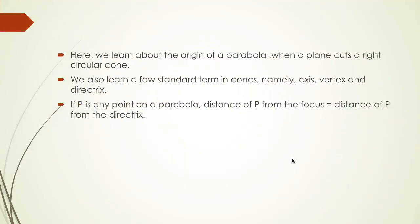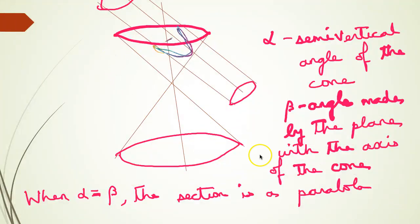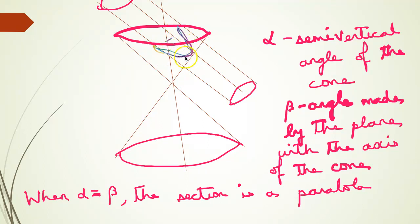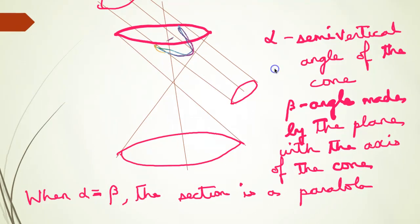Here we learn about the origin of a parabola — how a parabola is formed when a plane cuts a right circular cone. We also learn a few standard terms in Conics, namely axis, vertex and directrix. You have a right circular cone and a plane. If alpha is the semi-vertical angle of the cone and beta is the angle made by the plane with the axis, then when alpha equals beta, the section of the cone cut by the plane is a parabola. That is why it is derived from the word cone — hence a parabola is a conic section.